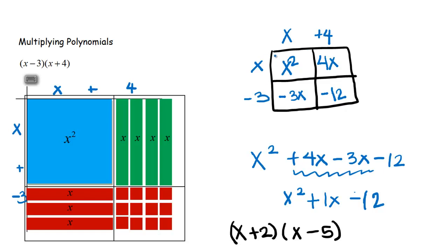The area of this rectangle gives us x squared, 4x, negative 3x, and negative 12. This is a really great organizational tool — if I gave you a trinomial times a binomial, all you're doing is adding more squares to the box. Then we do the same thing: x squared, 4x, negative 3x, and negative 12 — and the like terms appear just like before, giving us the same final answer.